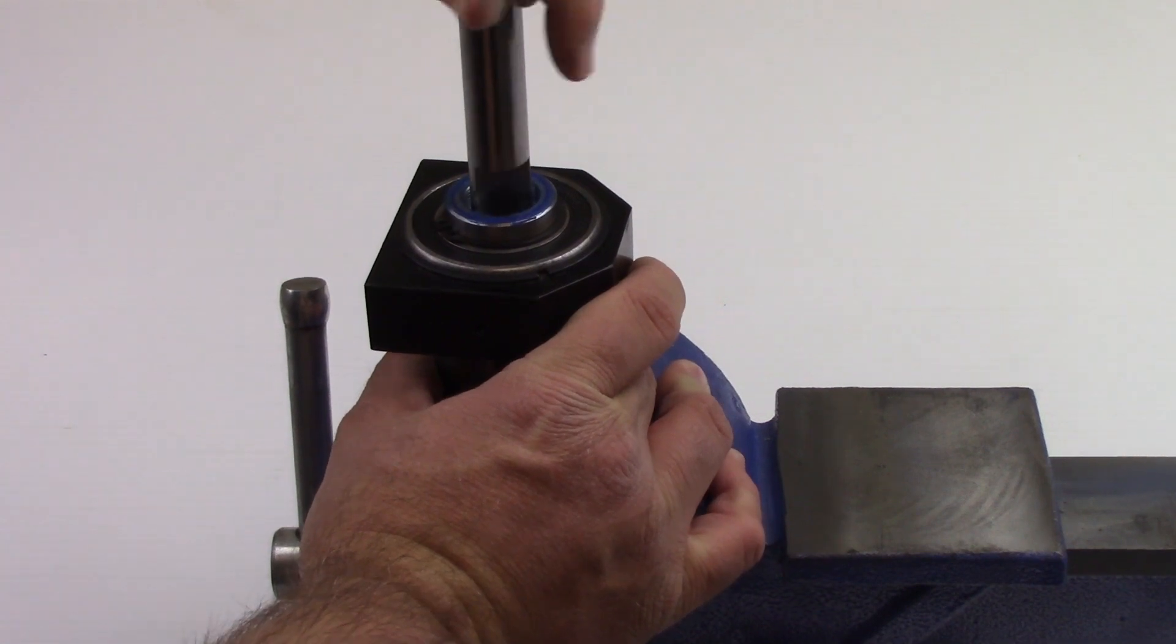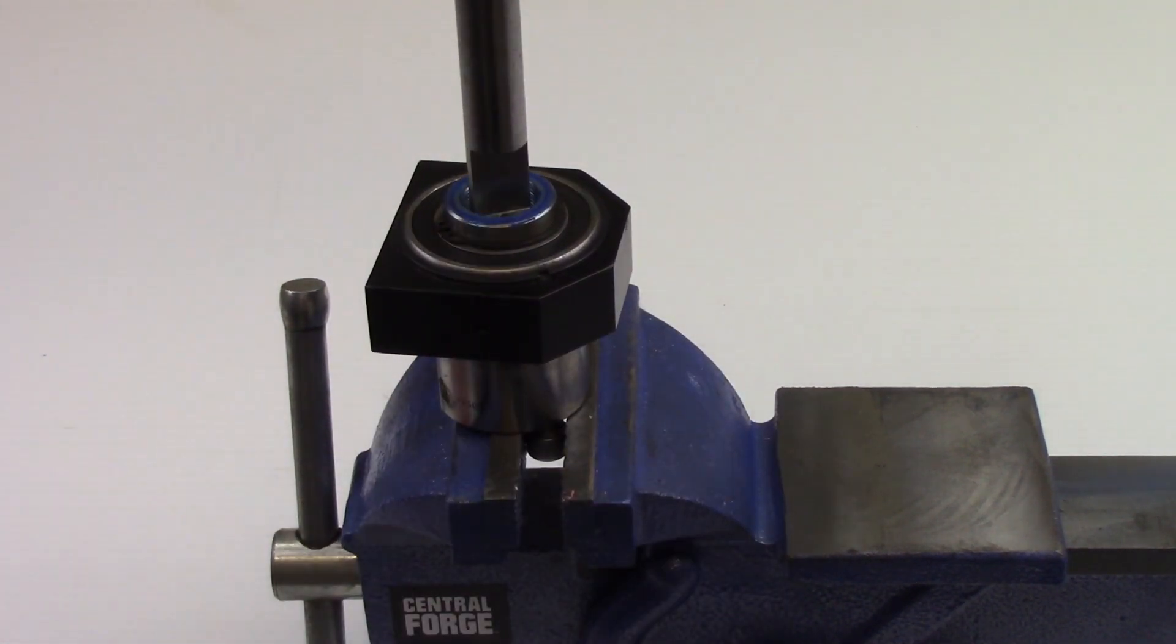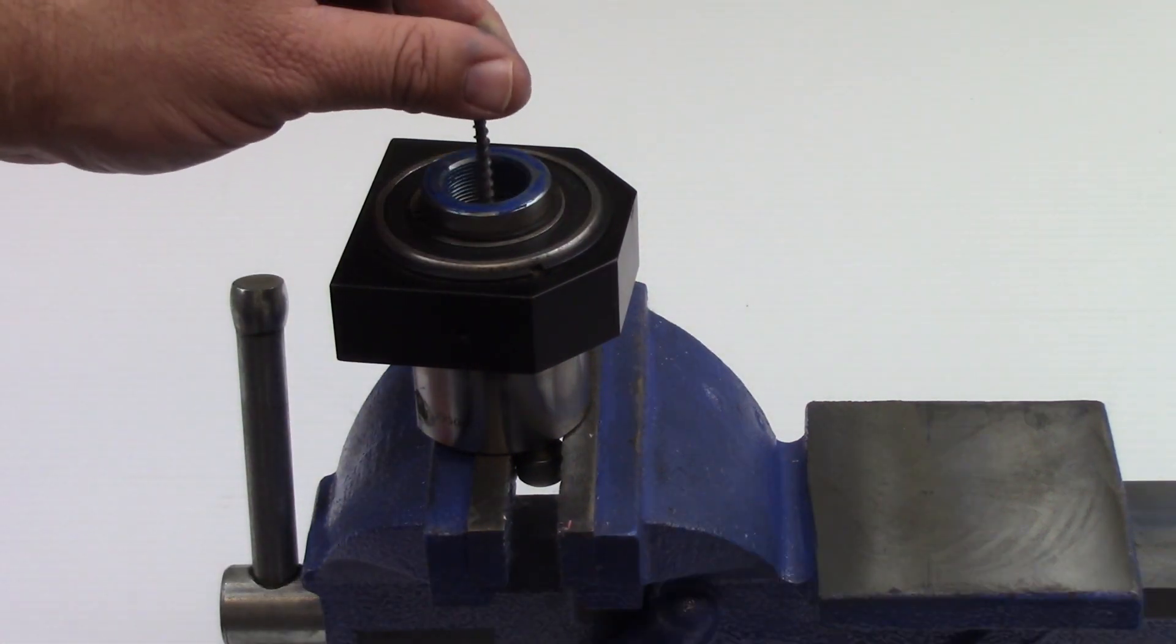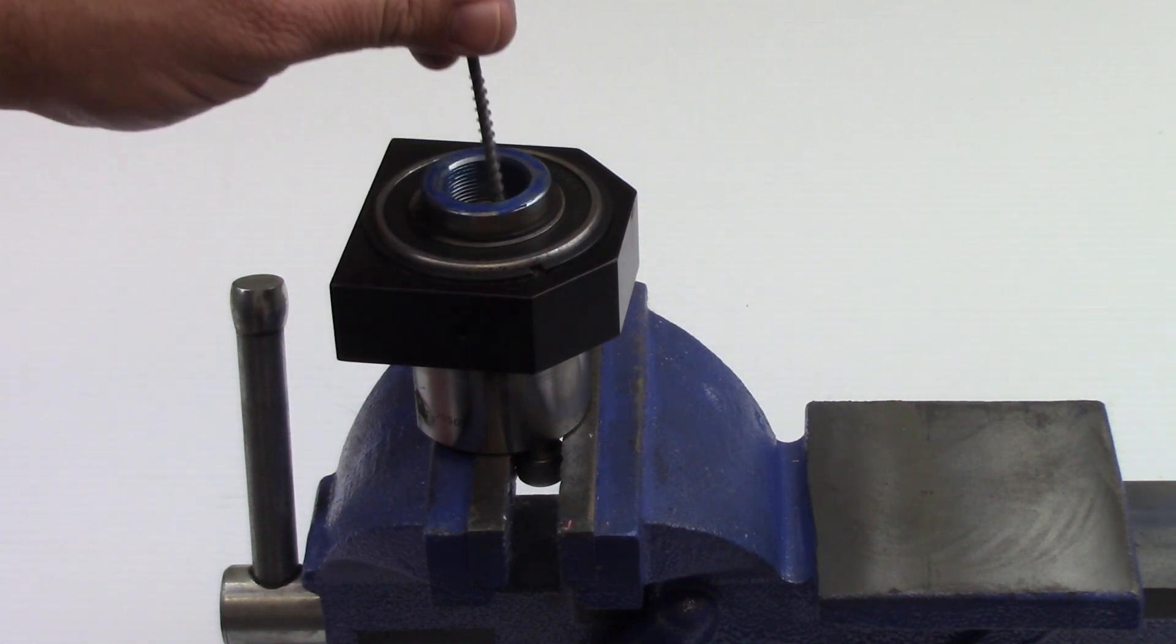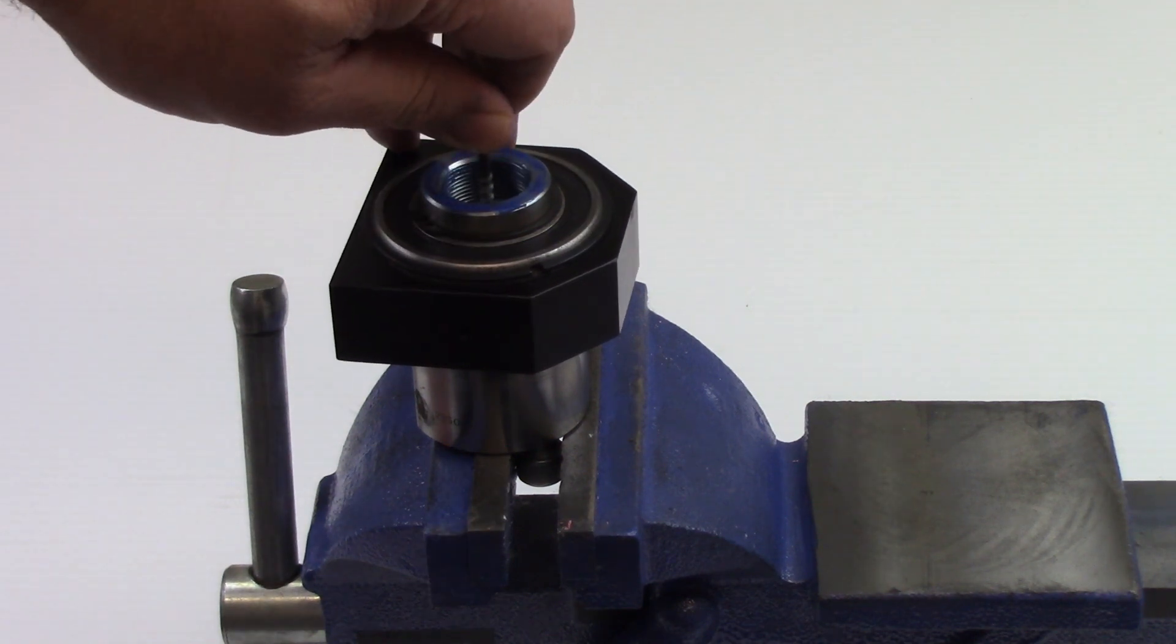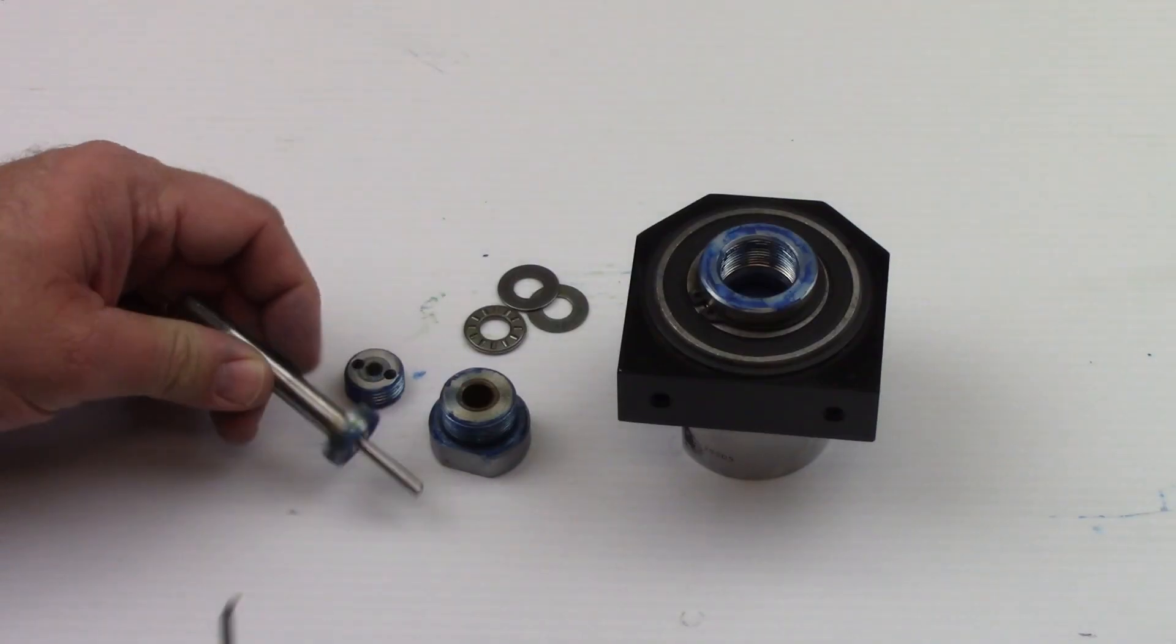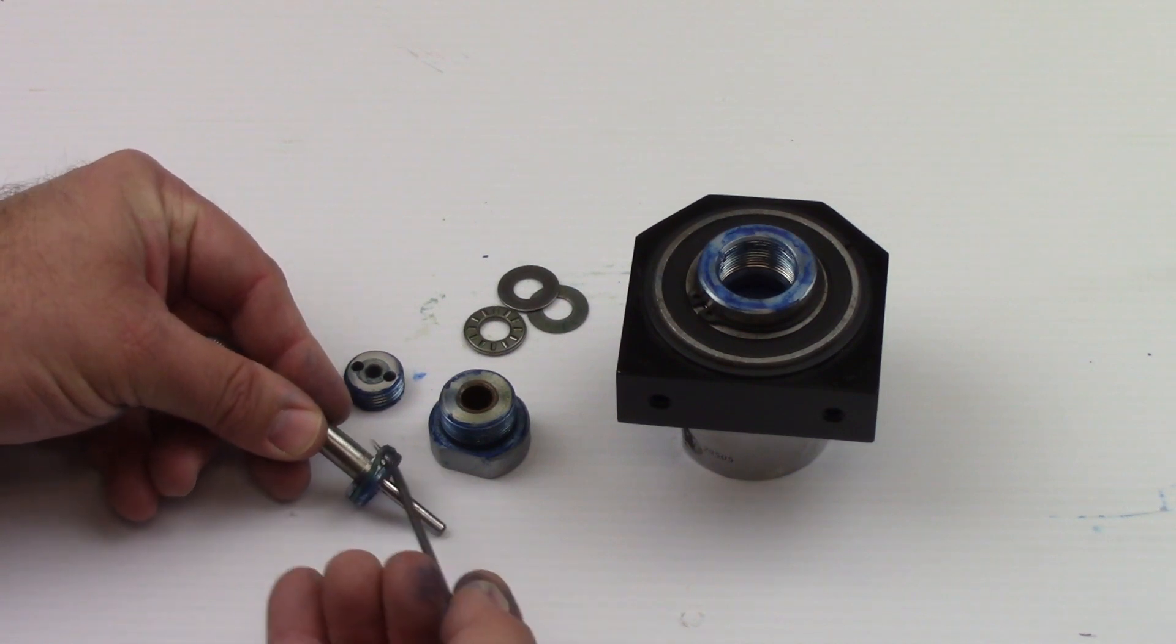Remove the seal nut with the seal tool. To remove the swivel seal, seal hoop, and backup ring from the swivel body, thread a quarter inch coarse thread screw into the swivel and pull outward. Discard the swivel seal, seal hoop, and backup ring.